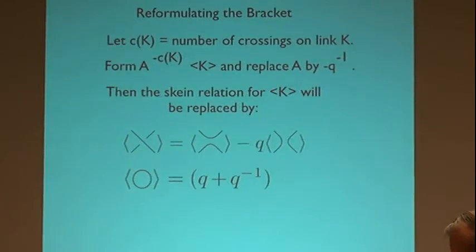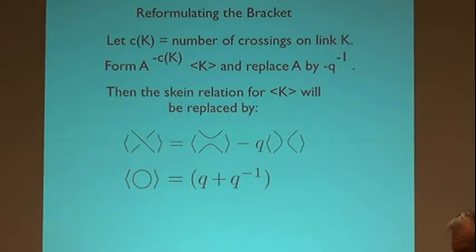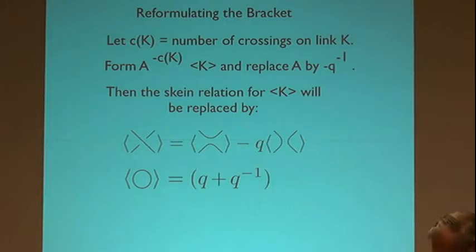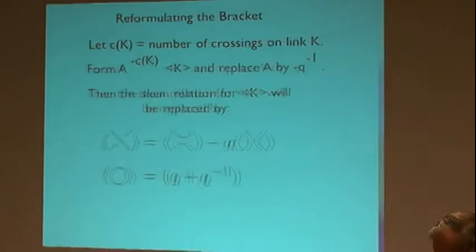I'm using Khovanov's convention to rewrite it, which is essentially to multiply the bracket in A by A to the minus the number of crossings, then rewrite with a q so that the value of the loop becomes q plus q-inverse. The minus sign gets transferred up into the skein relation, and only the B-type smoothings get a q — I call a crossing with a q multiplying it a B-type crossing. This is just a rewrite of the bracket.